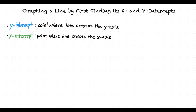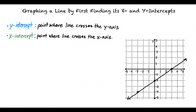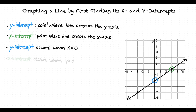Take, for example, the graph of this line. The y-intercept would be this point here, and the x-intercept would be this point here. Notice that the y-intercept occurs when the x-value of the line is 0, and the x-intercept occurs when the y-value of the line is 0.